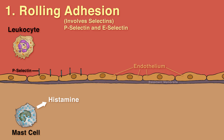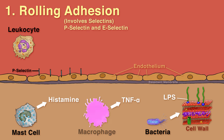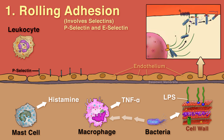P-selectin also appears upon exposure of the endothelium to TNF-alpha or LPS. TNF-alpha is a cytokine produced by macrophages upon pathogen detection that causes endothelial activation. Activated endothelial cells rapidly externalize granules called Weibel-Palade bodies, which contain preformed P-selectin. TNF-alpha and LPS also induce synthesis of E-selectin, which appears on the endothelial cell surface a few hours later.